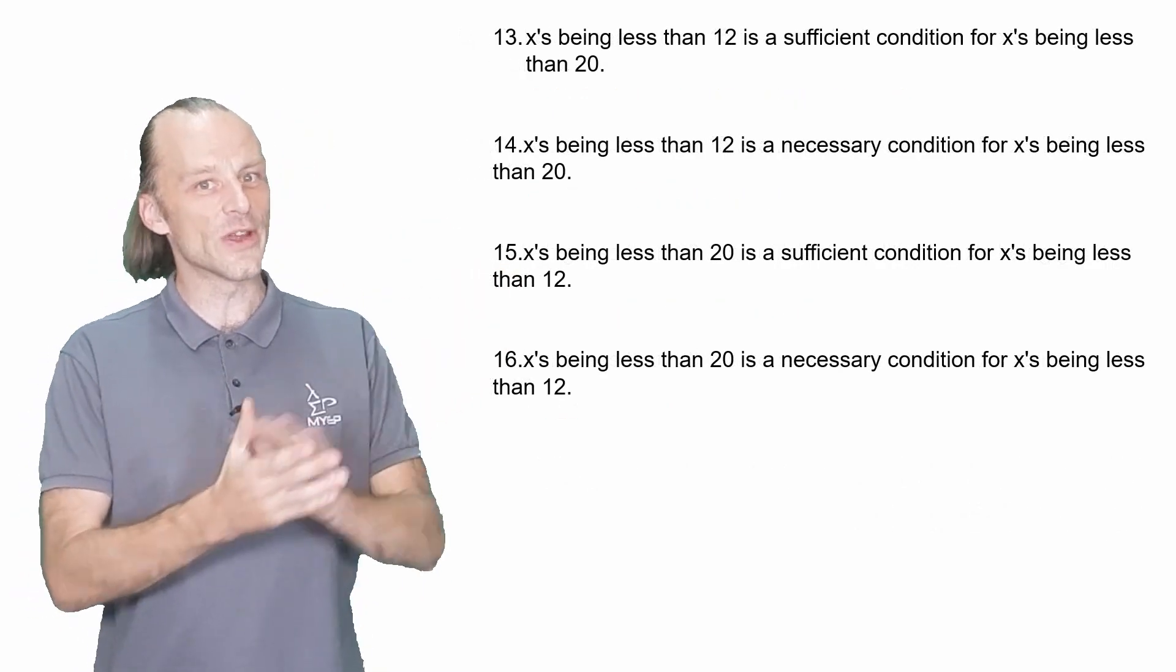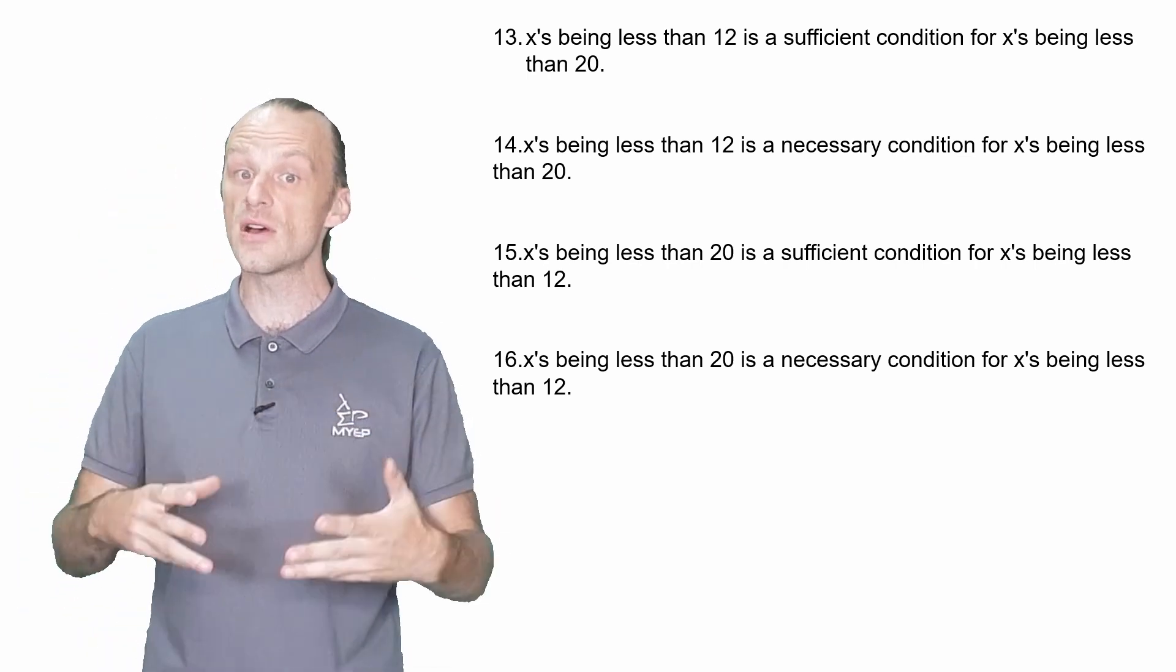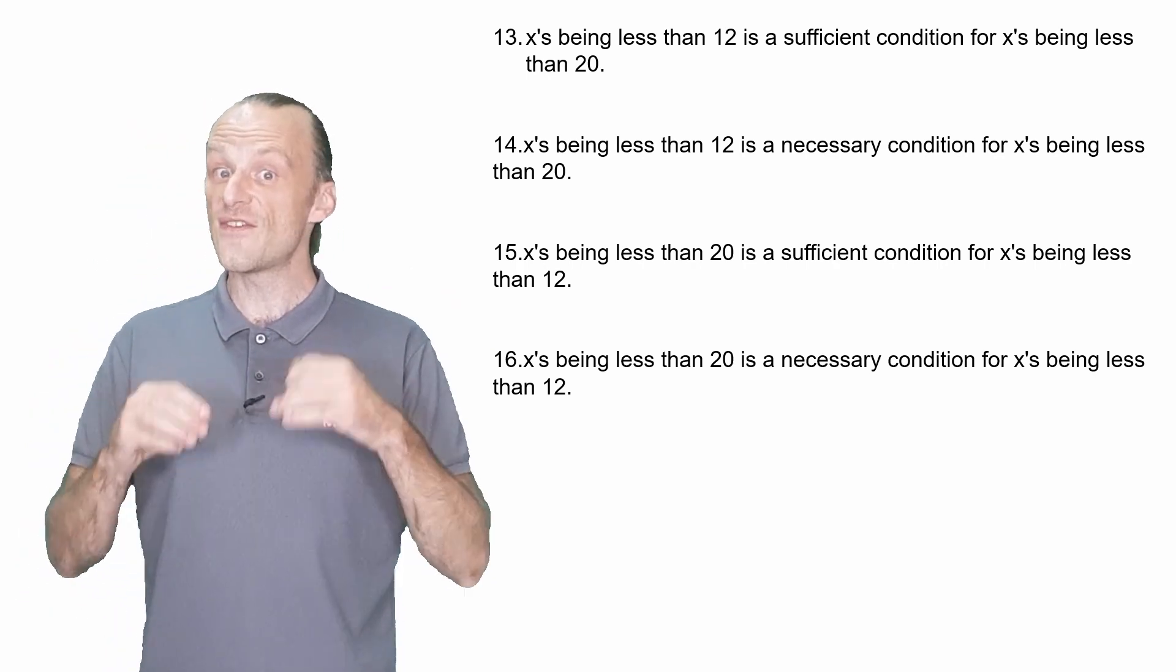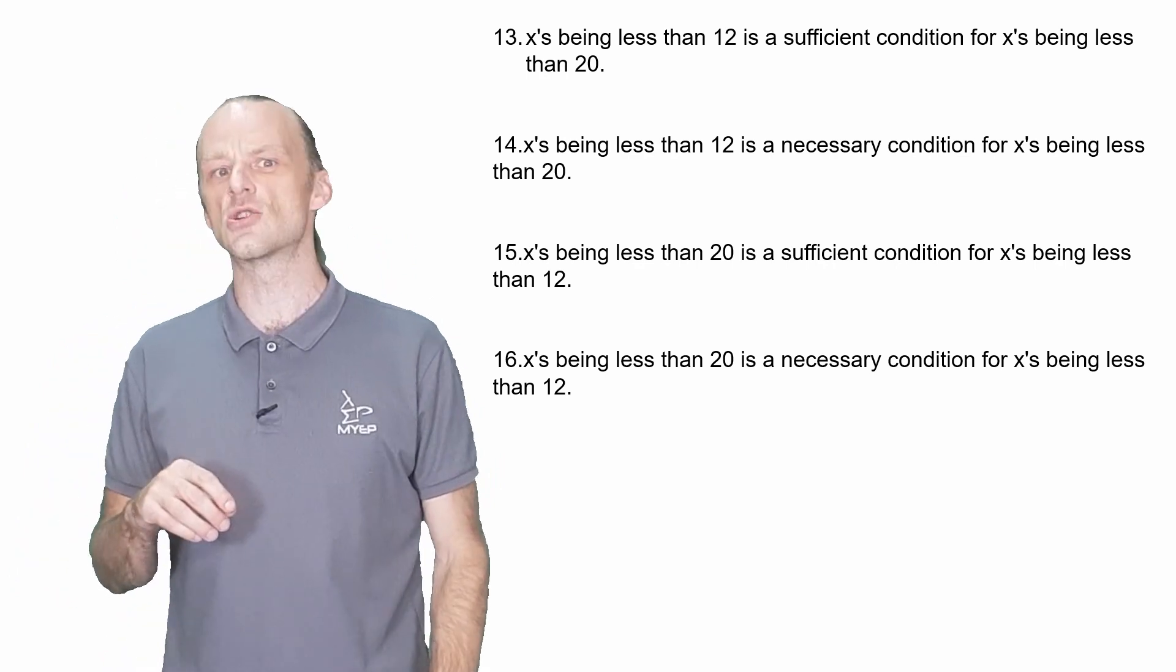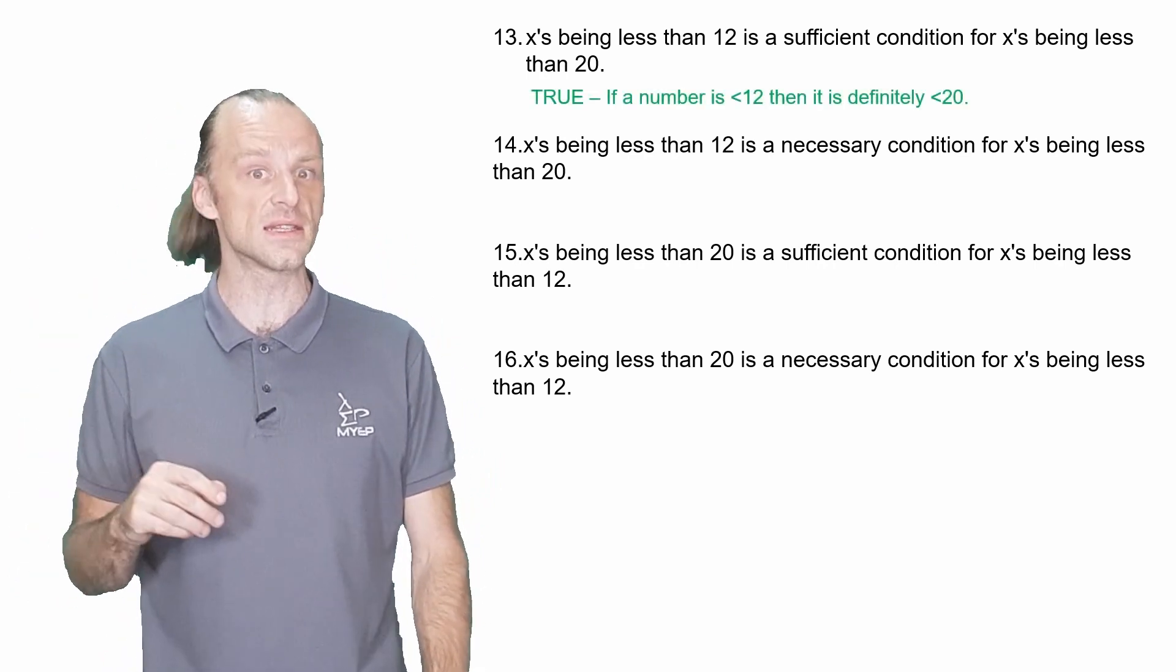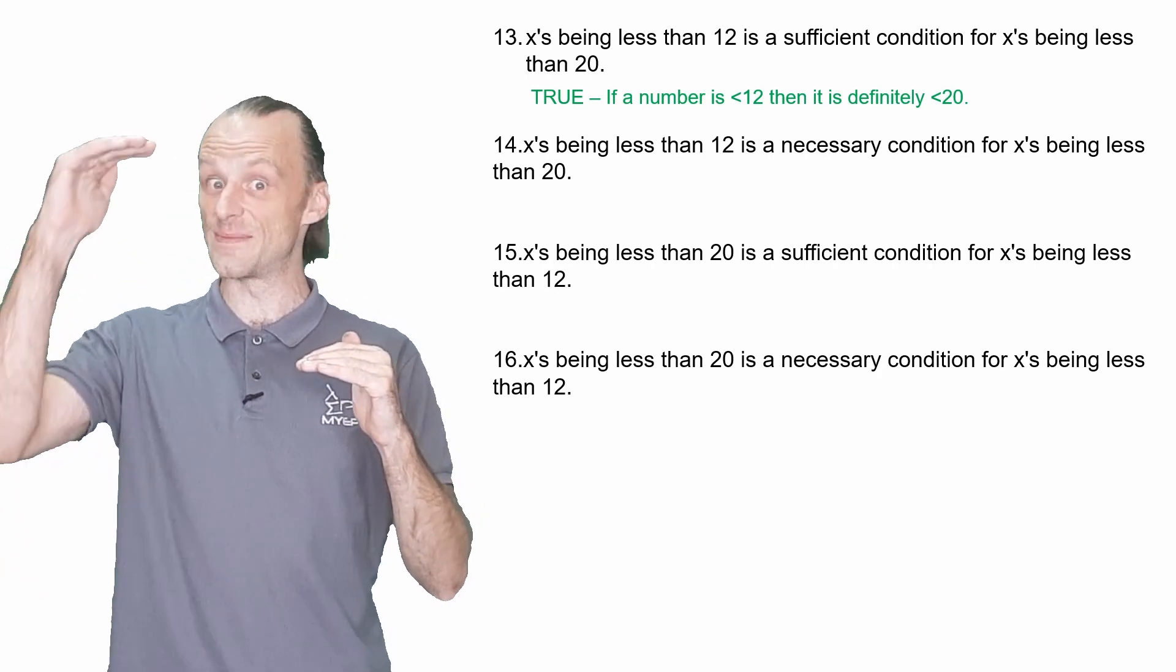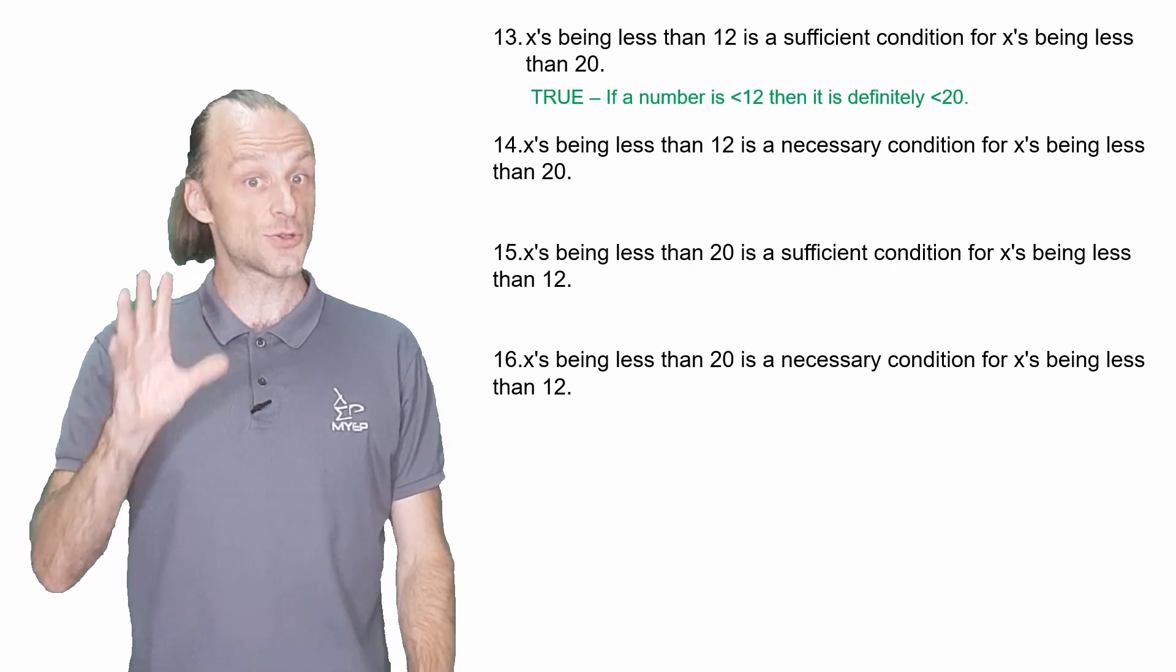Let's look at a few more examples. In number 13, it's a sufficient condition question. So we're asking, does A being true guarantee that B is true? In other words, if a number is less than 12, does this guarantee that it's less than 20? And yes, it does. If a number is less than 12, then it's definitely going to be less than 20 because of how the number line works. So this one is true.